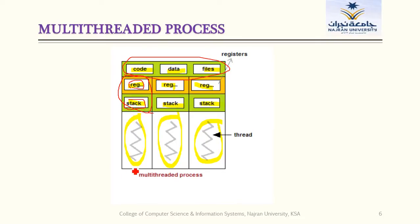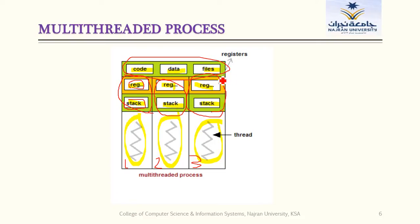To clarify: thread one has its own register and stack, thread two has its own register and stack, and thread three also has its own register and stack — all separate. But code, data, and files are shared among all threads belonging to the same process. This is the main difference clearly visible between single-threaded and multi-threaded process models.